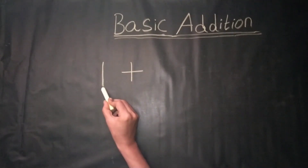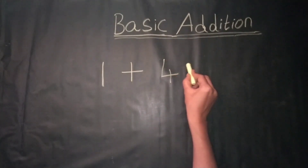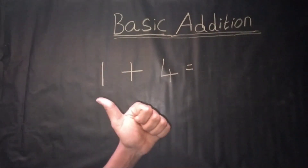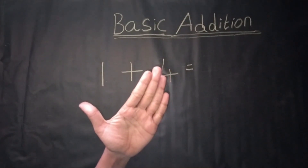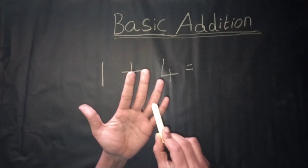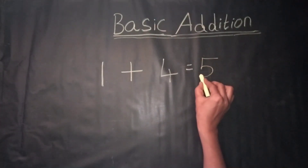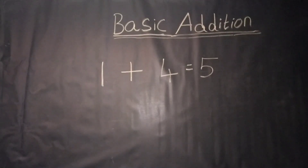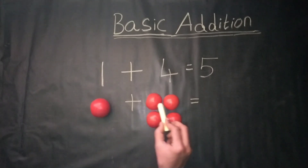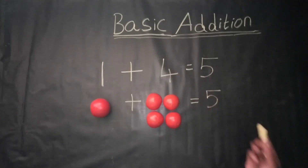1 plus 4 is equal to — counting by fingers, 1 plus 4, count together: 1, 2, 3, 4, 5. We get the answer: 5.